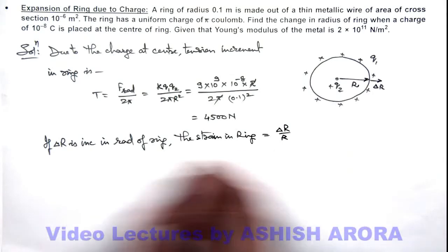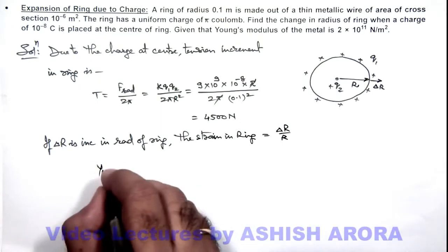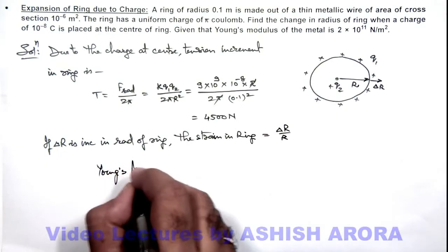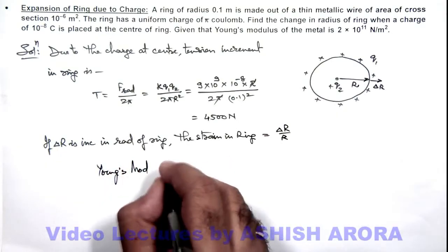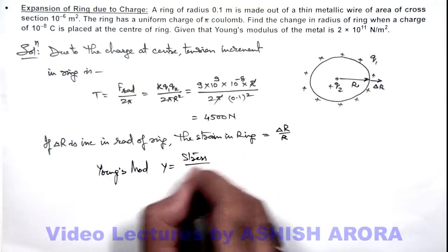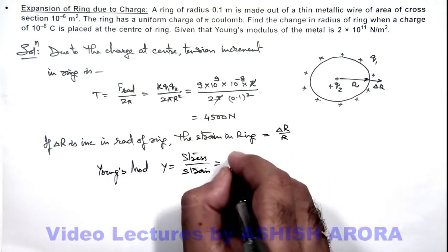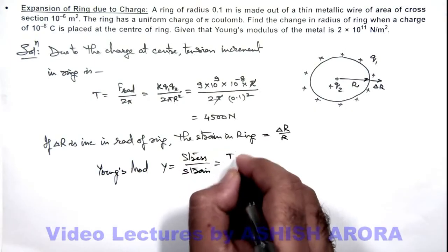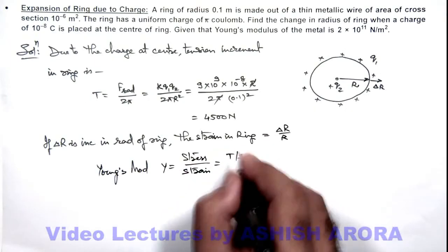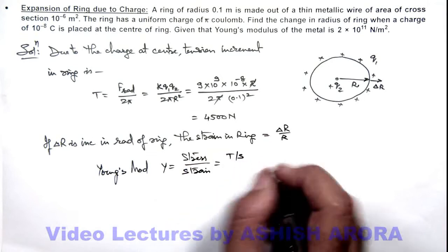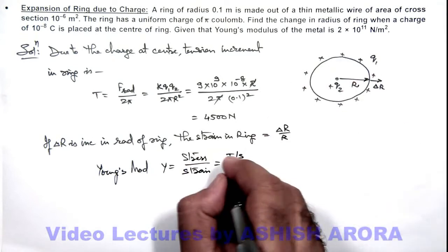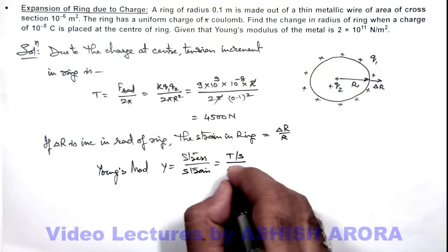We can use Hooke's law. Young's modulus of material can be given as stress by strain. The value of stress we can write as the tension increment divided by the cross-sectional area, here I'm taking S as cross-sectional area of this ring, divided by strain, which is Δr by r.